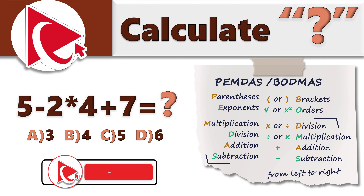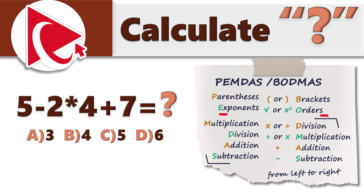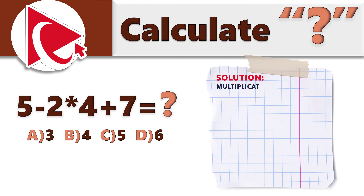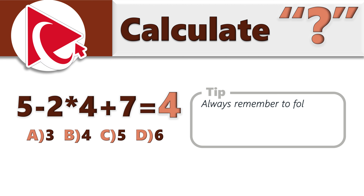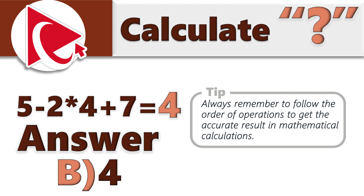The key is to determine the order of operations — PEMDAS (Parentheses, Exponents, Multiplication, Division, Addition, Subtraction), also known as BODMAS. First, do multiplication: 2×4=8, giving the expression 5−8+7. Next, from left to right, do subtraction: 5−8=−3. Then: −3+7=4. Always follow the order of operations to get accurate results. The correct answer is Choice B, 4.